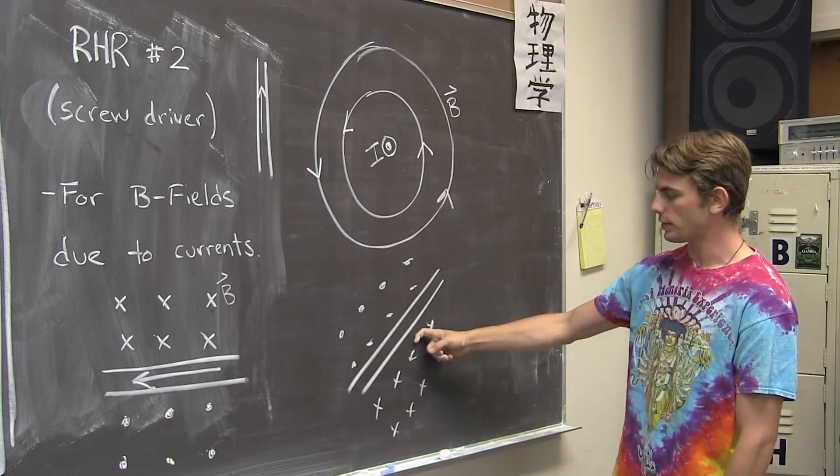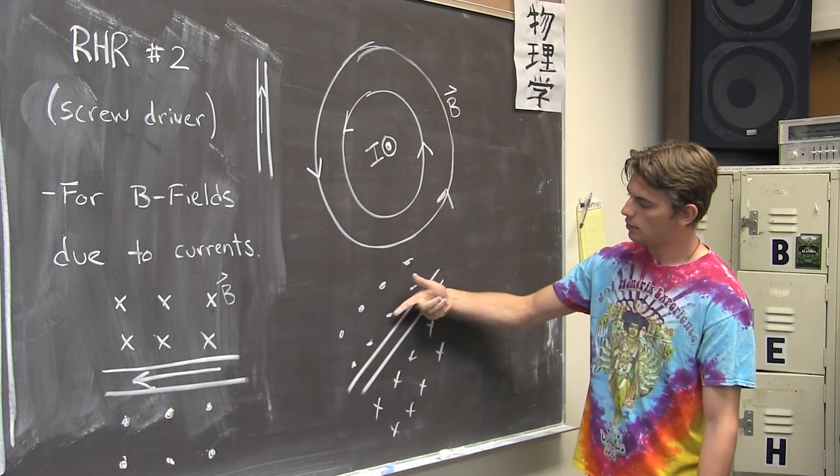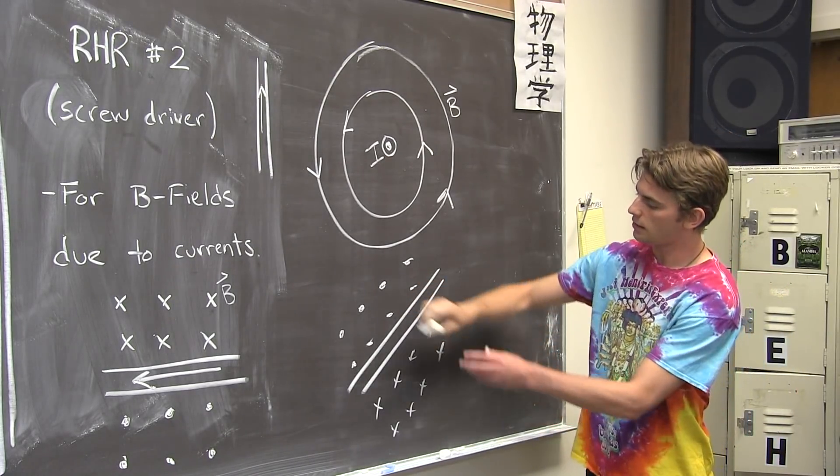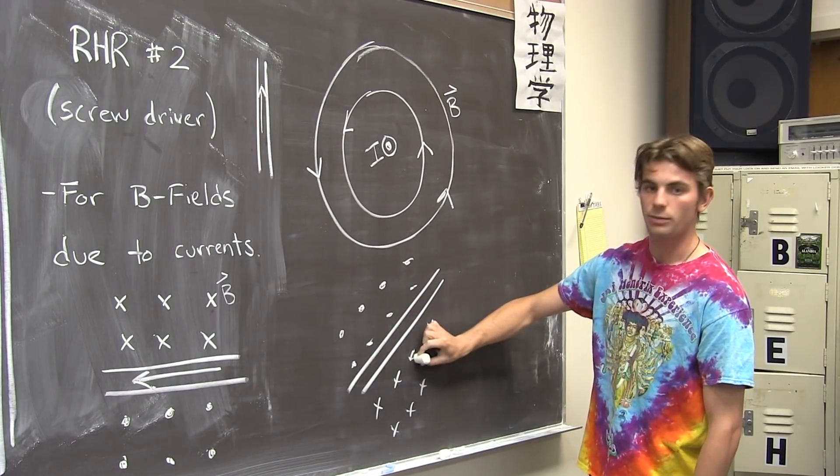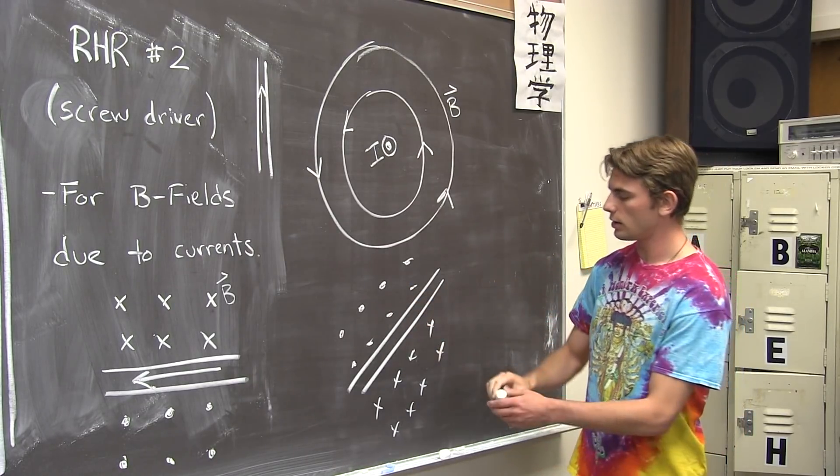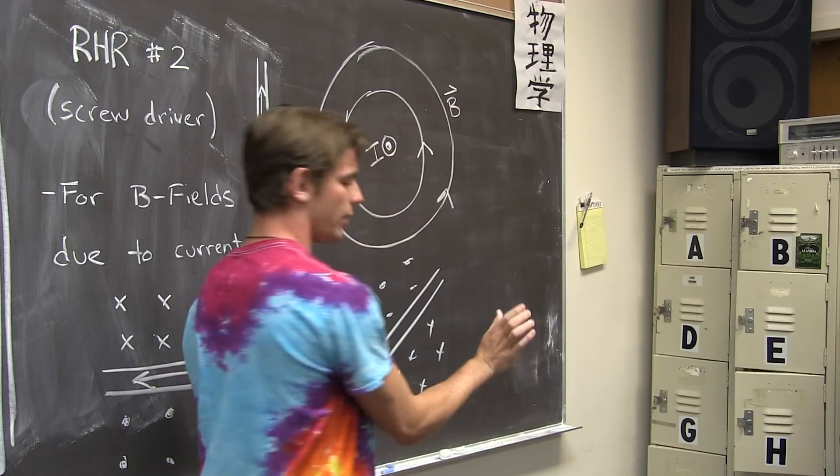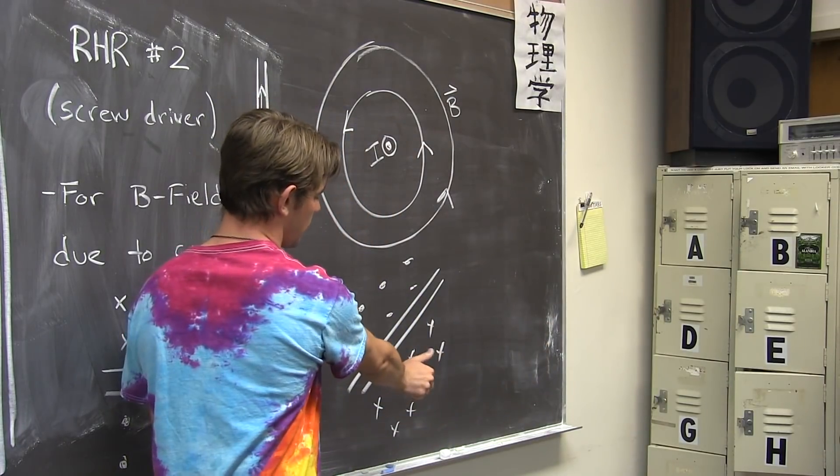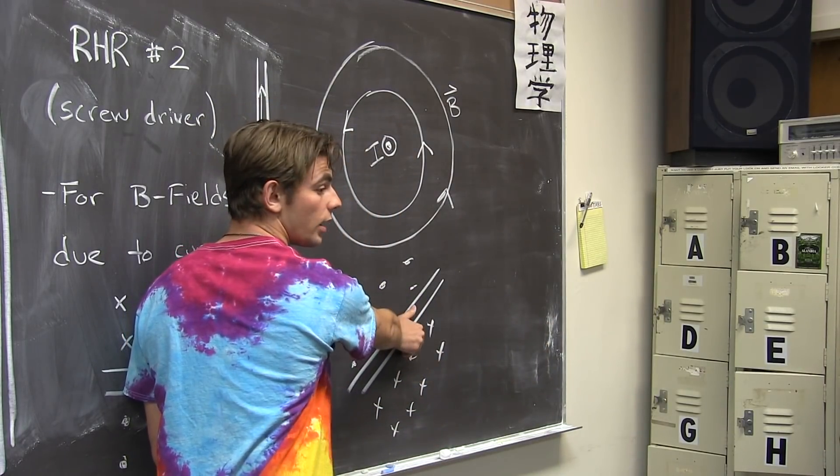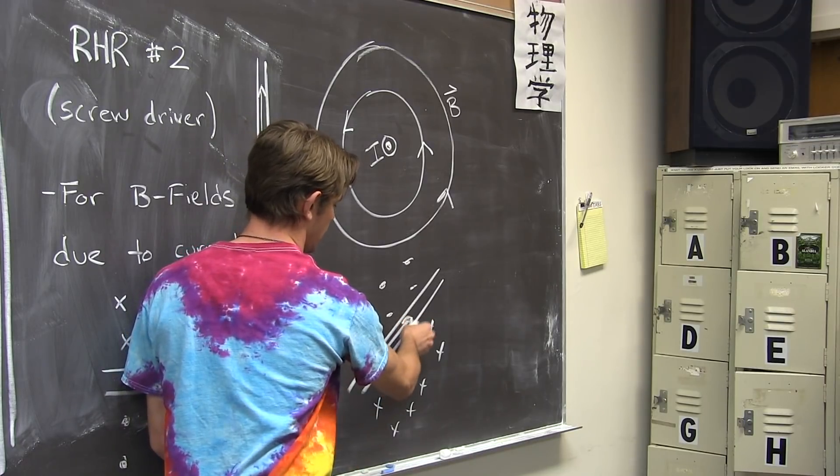Now, the last example is similar to the first. We have the magnetic field coming out on top, and into the page on the bottom, looping around. The only way for that to occur is if the current is going up and to the right, this way.